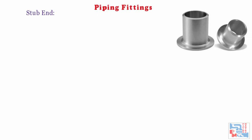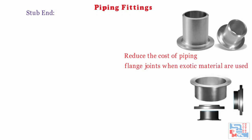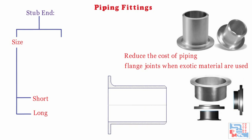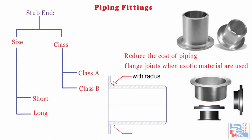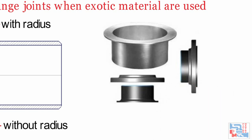Stub ends are used with backing flanges for flange joints to reduce the cost of piping. When exotic materials are used in piping, stub ends connect loose flanges in the piping. There are two types based on size: short stub end and long stub end. And two types based on class: Class A with radius and Class B without radius at the corner. Stub ends can be used with slip-on flanges, and we must ensure sufficient clearance between the weld of pipe to stub end and flange.